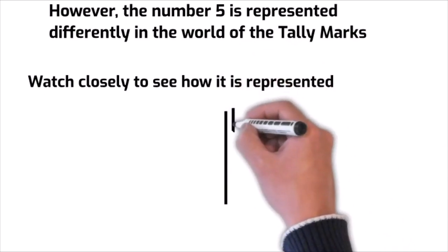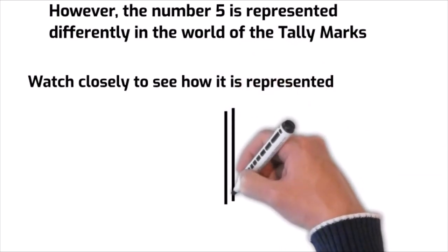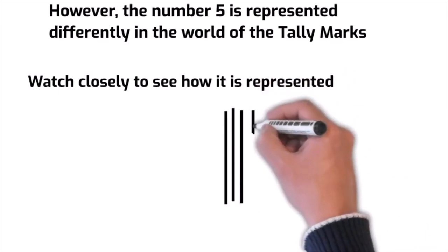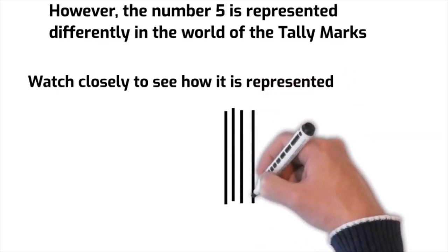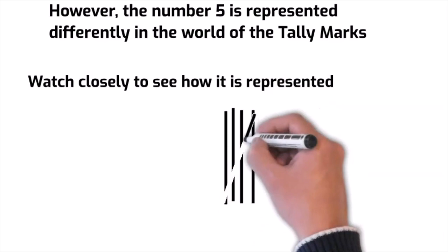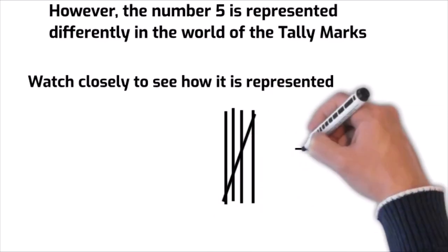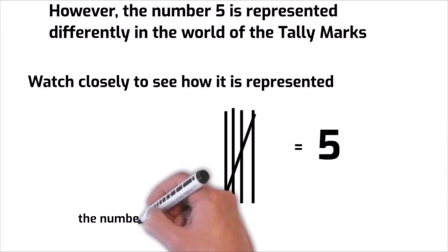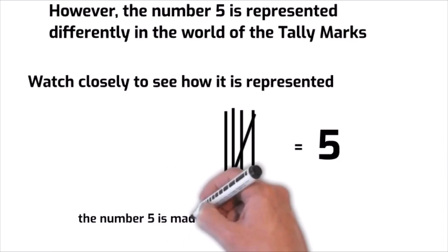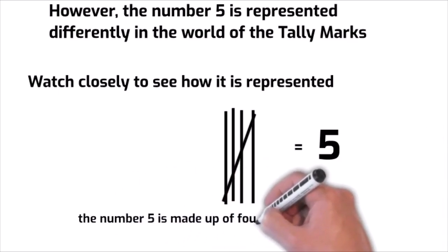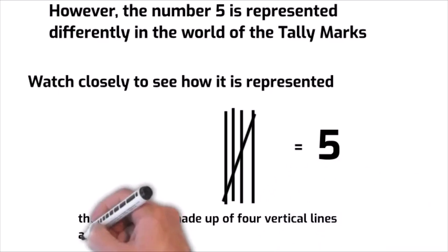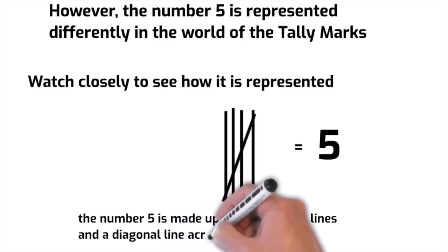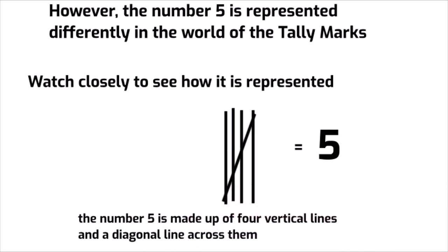One vertical line, two vertical lines, three vertical lines, four vertical lines and a diagonal line across gives us five. The number five is made up of four vertical lines and a diagonal line across them.